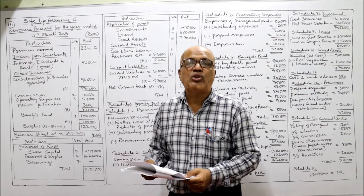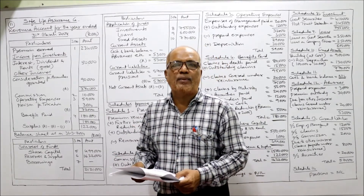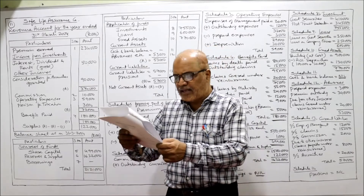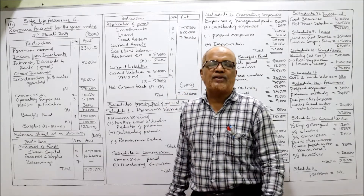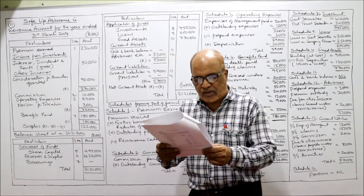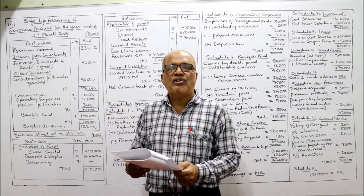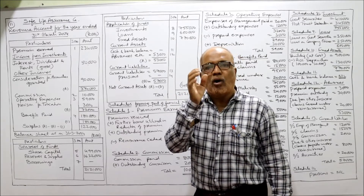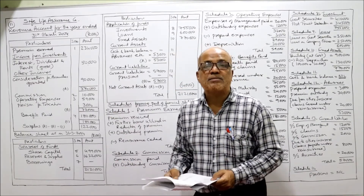Claims by death — Schedule 4. Claims by maturity — Schedule 4. Benefits paid and expenses of management — Schedule 3 (operating expenses). Commission to agents — Schedule 2. Income tax on profits will be taken below operating expenses as provision for taxation. Surrenders — Schedule 4. Annuities paid — Schedule 4. Bonus in cash — Schedule 4. Bonus in reduction of premium — Schedule 4. Preliminary expenses can be deducted either from capital or from reserves and surplus; we will deduct it from capital.